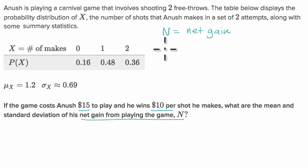We can define N in terms of X. What is his net gain going to be? Well, let's see. N is going to be equal to 10 times however many shots he makes, so it's going to be 10 times X, and then no matter what he has to pay $15 to play. Minus 15.